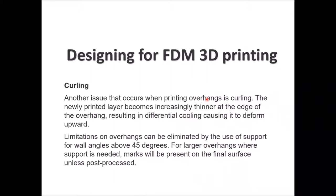The other defect we may face while printing through FDM is curling. This happens when printing overhangs and the newly printed layers become increasingly thinner at the edge of the overhang, resulting in different cooling properties which cause the material to deform upwards. This limitation can be eliminated by the use of support for wall angles above 45 degrees, same as the previous problem. For larger overhangs where support is needed, be aware that marks will be present on the final surface unless you do special post-processing.